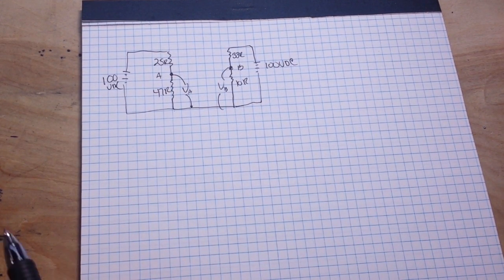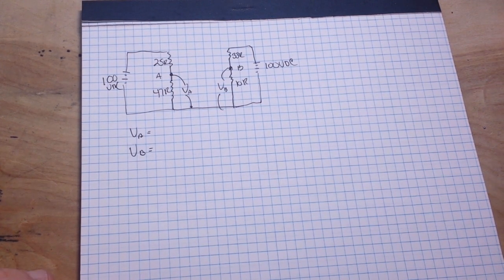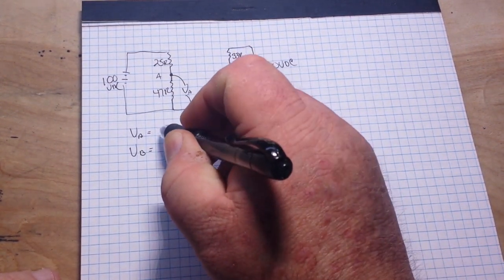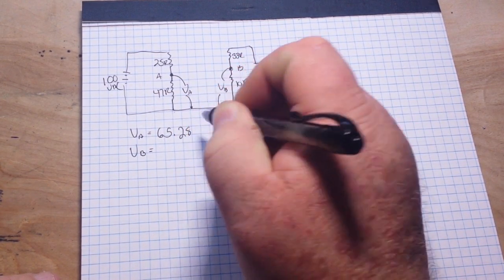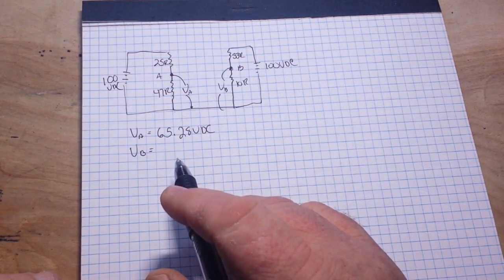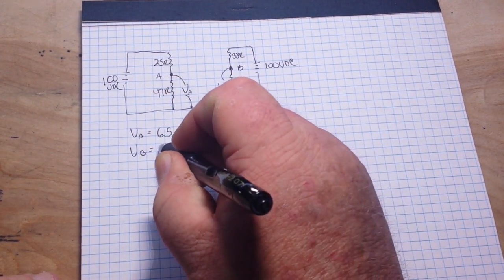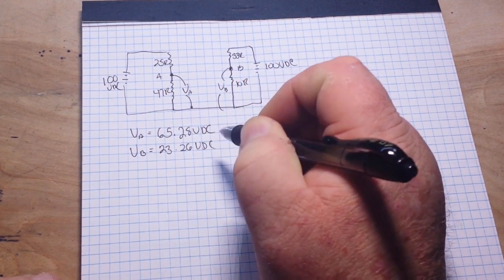I'll give you a couple seconds to think about it. Okay, so the voltage at VA is 65.28VDC and the voltage at VB is 23.26VDC.